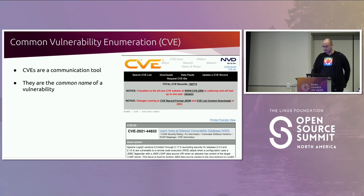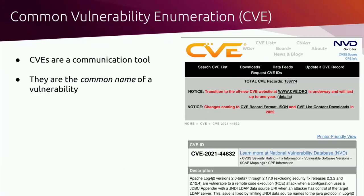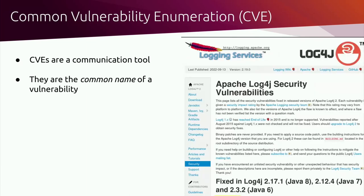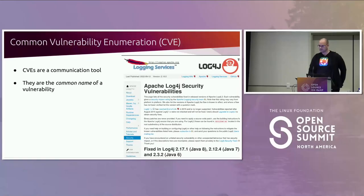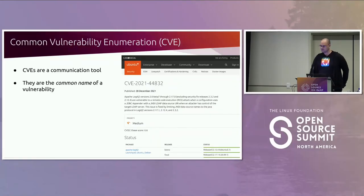Common Vulnerability Enumeration is almost always referred to by the acronym CVE. CVE is the naming system to specify different vulnerabilities — it's the common name of a vulnerability. By using CVE, many groups can talk about the same vulnerability without getting confused. Upstream developers and projects use CVEs to communicate vulnerabilities with their users and stakeholders, and downstream groups also use CVEs for communication.